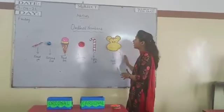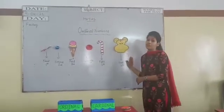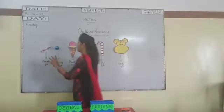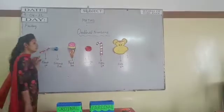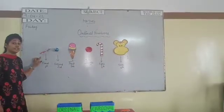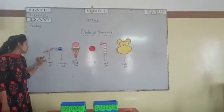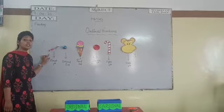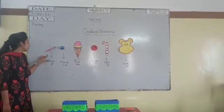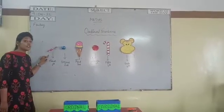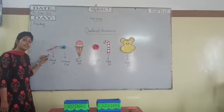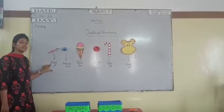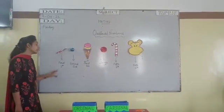As you can see there are so many objects on my whiteboard. So now tell me the position of these objects. What is the position of pen? Yes, first. F-I-R-S-T, first.